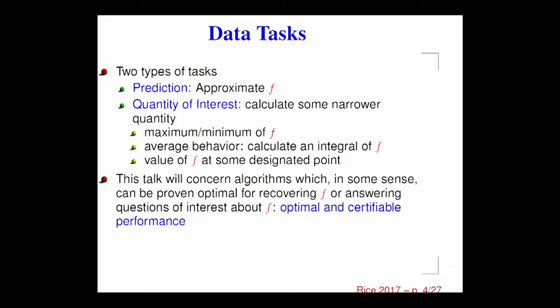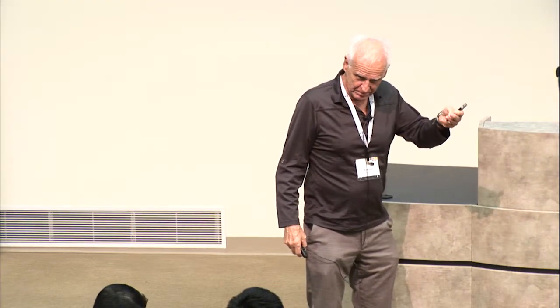I'm a mathematician, so my interest is centered around two things. I want algorithms to solve these problems, but I want the algorithms to be optimal and certifiable. Optimal means I'm worried that next week you'll say you've got a better algorithm than mine. Certifiable means that if you ask me for the accuracy of the algorithm, I can tell you this before you even begin the computation.